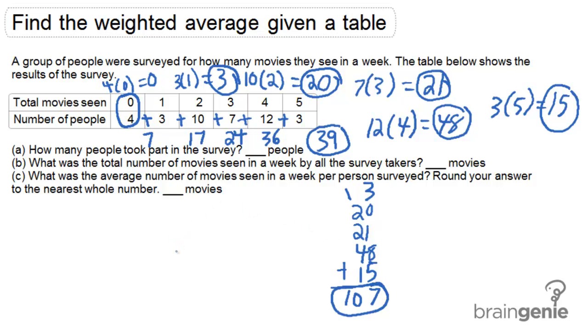Part C, what was the average number of movies seen in a week per person surveyed? Round your answer to the nearest whole number. Okay, so if we want the average number of movies per person, what we need to do is divide the total number of movies, which we figured out was 107, by the total number of people surveyed, which was 39.